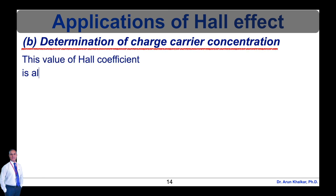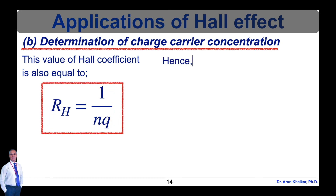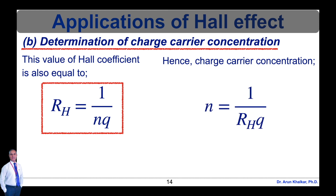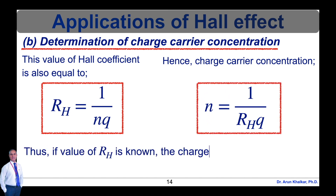Next is the determination of charge carrier concentration. The Hall coefficient is R_H = 1 / (n·q), so the charge carrier concentration n = 1 / (R_H·q). If the value of R_H is known, the charge carrier concentration can be found using this equation.